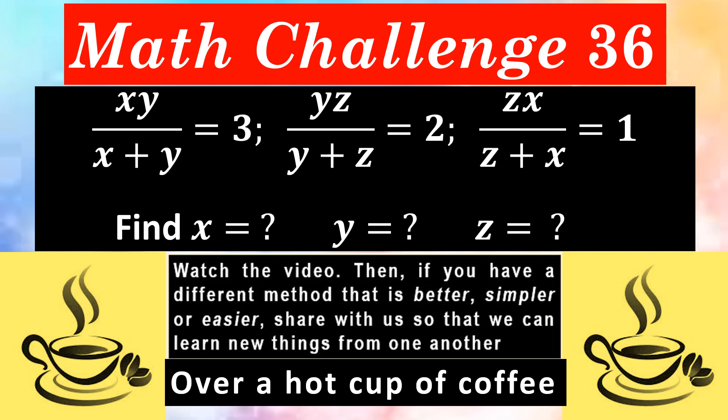Taking two at a time, the ratio of their product to their sum is given. Thus, xy upon x plus y equals 3, yz upon y plus z equals 2, and zx upon z plus x equals 1.